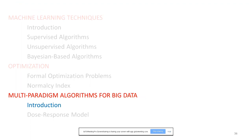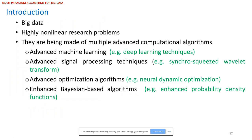Now we talk about multi-paradigm algorithms — getting more practical in our presentation. Multi-paradigm expert systems or machine learning techniques are developed by combining some of these algorithms, like advanced deep learning techniques, advanced signal processing techniques such as wavelet transform or synchrosqueezing wavelet transform, advanced optimization algorithms like neurodynamic optimization, and enhanced Bayesian-based algorithms like enhanced probability density functions.